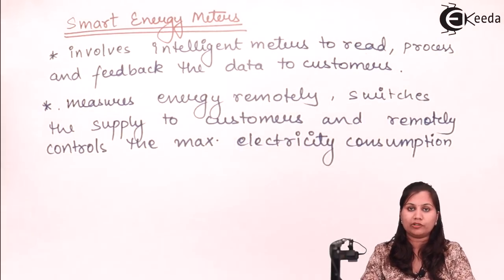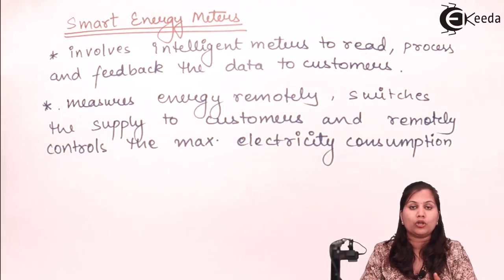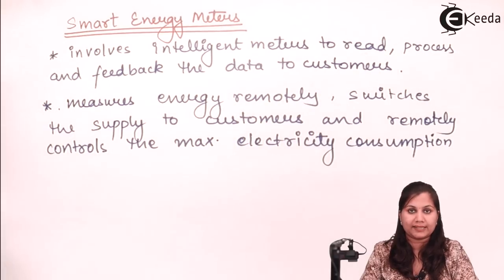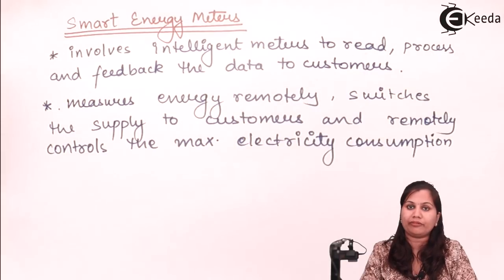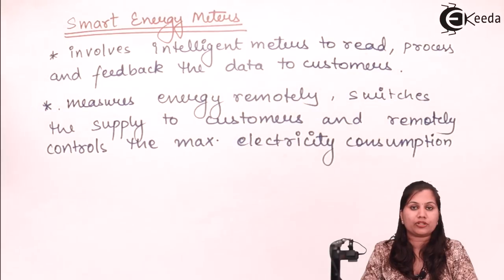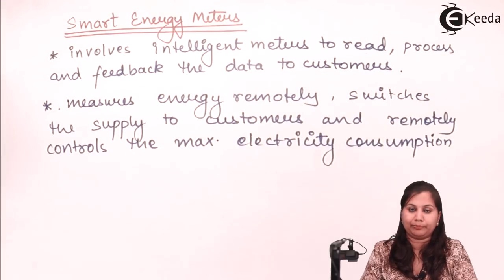To summarize, energy meters are used for the measurement of energy, which is measured by measuring power over a period of time. We studied the various classification factors and three main types: the electromechanical induction type, the electronic energy meters, and the smart energy meters. All energy meters measure energy by measuring power and integrating it over a period of time.